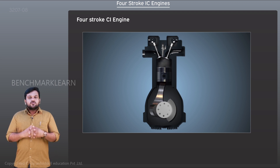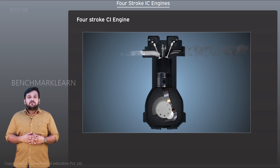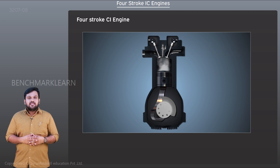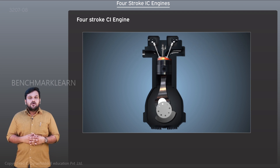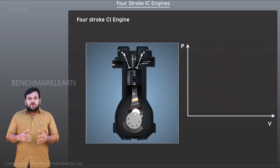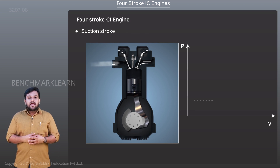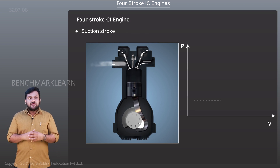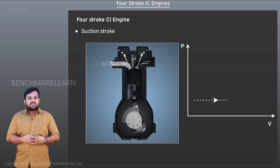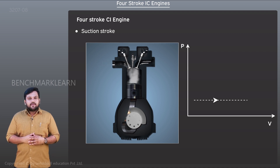Four-stroke CI engines operate on the basis of the diesel cycle, whose PV diagram is shown. During the suction stroke, the inlet valve opens and only air is sucked into the cylinder. This is represented by a dotted line and is also a major difference compared to the SI engine.